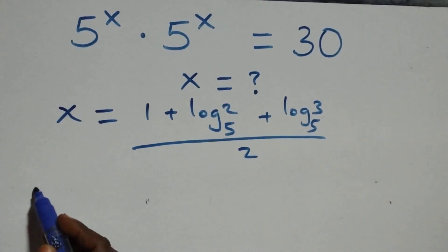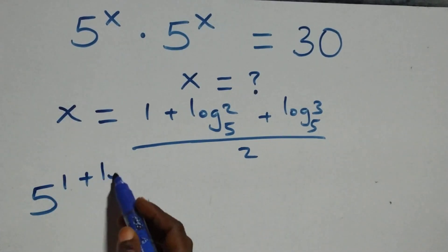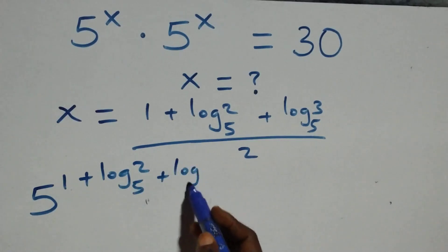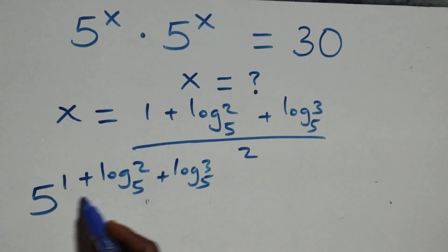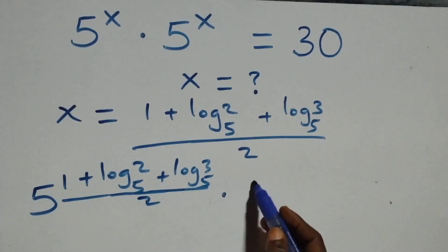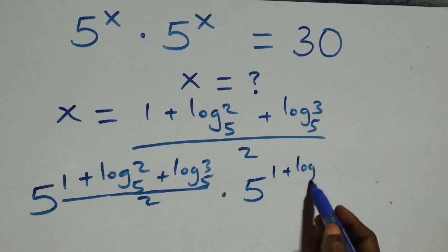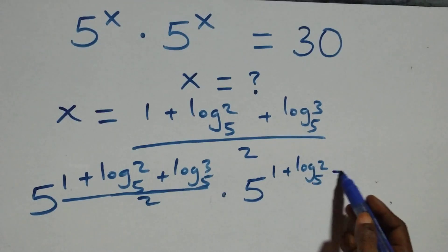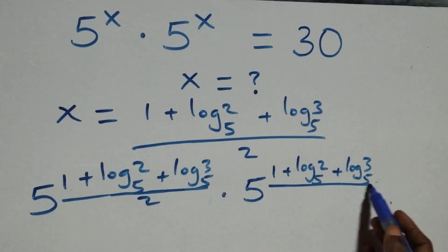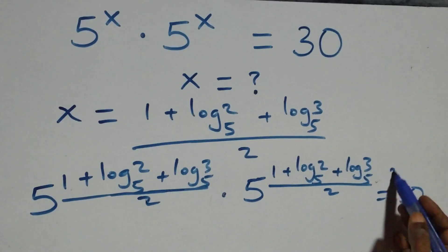Let's verify by substituting the value of x. We have 5 raised to power (1 plus log₅2 plus log₅3) all over 2, times 5 raised to power (1 plus log₅2 plus log₅3) all over 2, equals to 30 on this side.